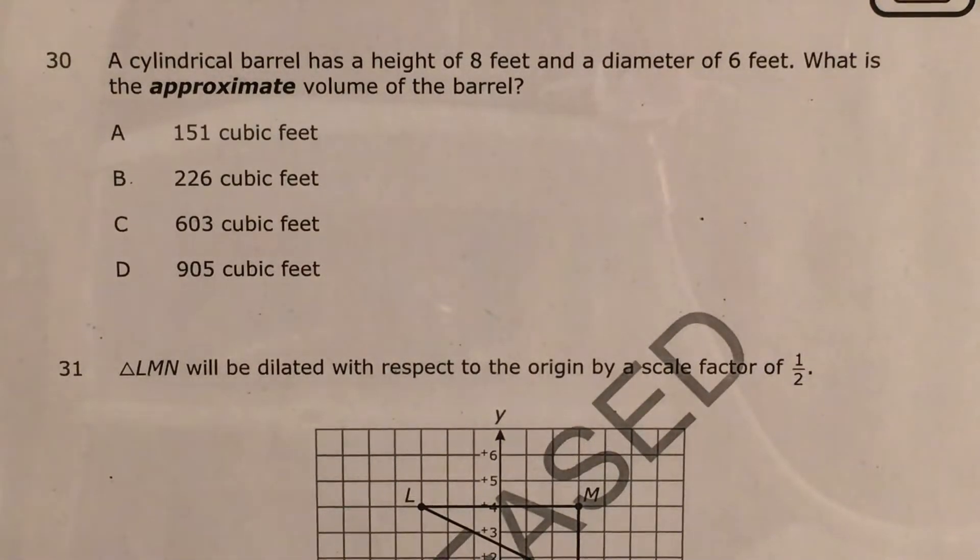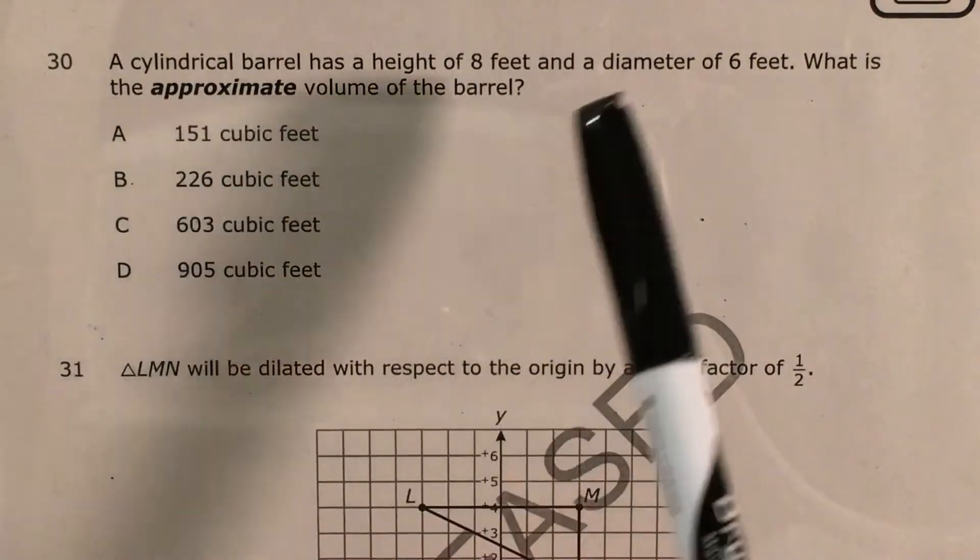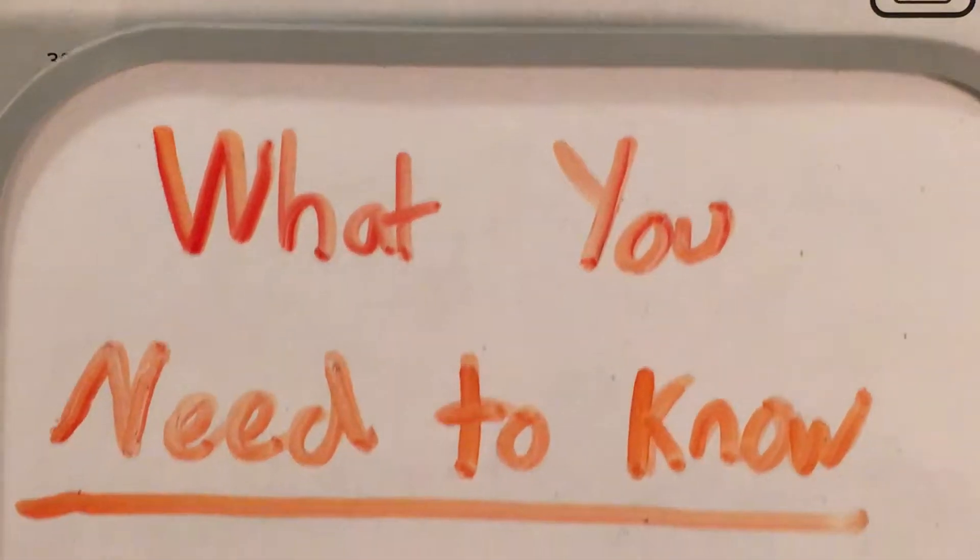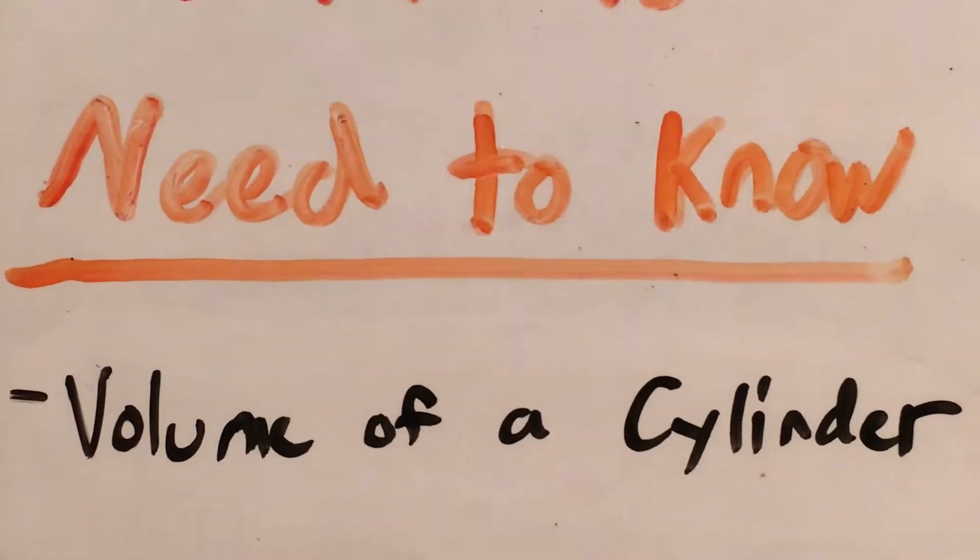The question tells us that a cylindrical barrel has a height of 8 feet and a diameter of 6 feet, and we're supposed to find the approximate volume of that barrel. Now the big skill that this question tests us on is the volume of a cylinder.